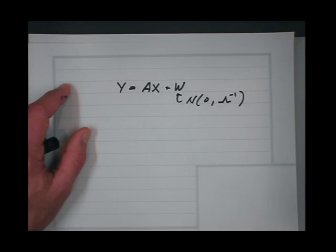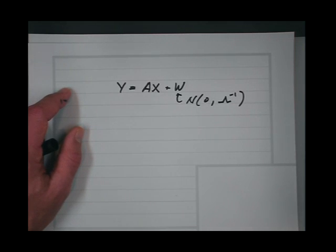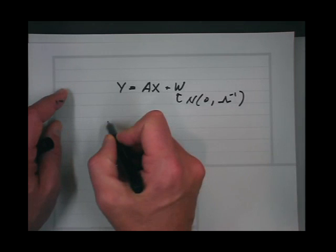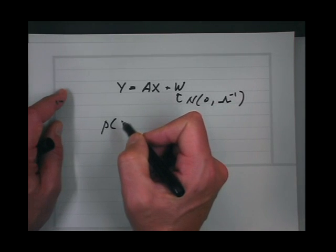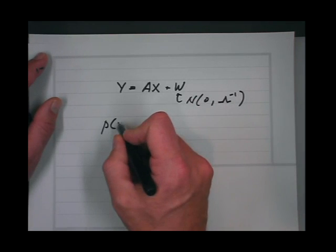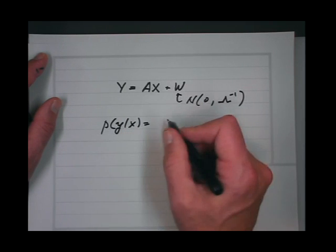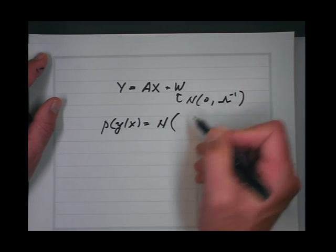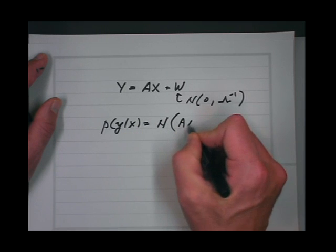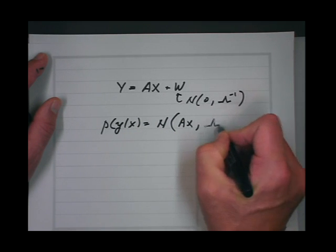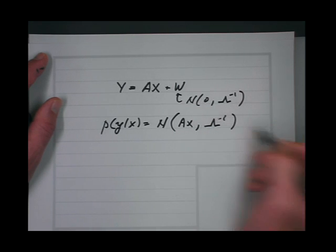Lambda is a diagonal matrix, typically, and a precision matrix — it's the inverse covariance. So then the conditional distribution of y given x is equal to a normal distribution with a mean of Ax and a variance of lambda inverse.